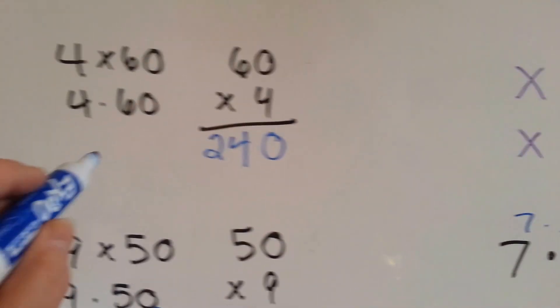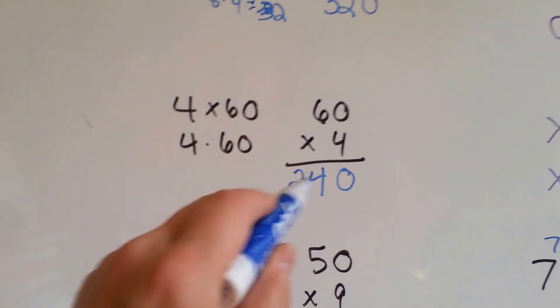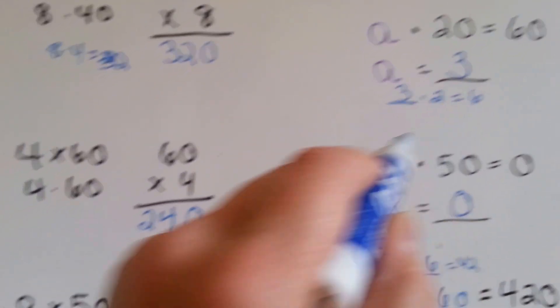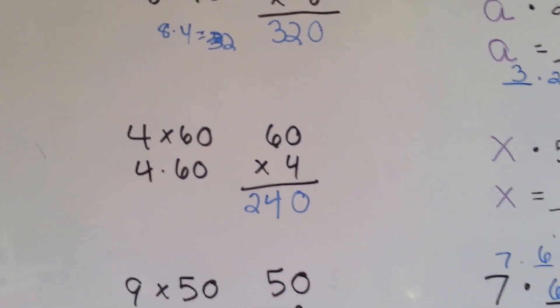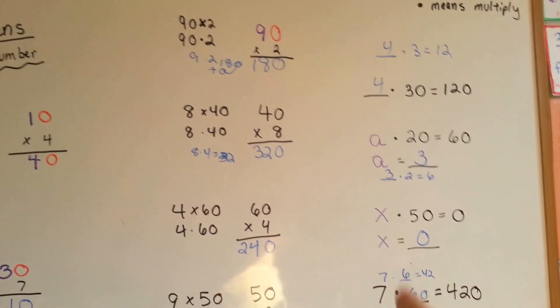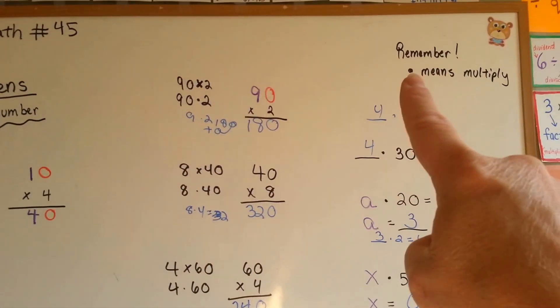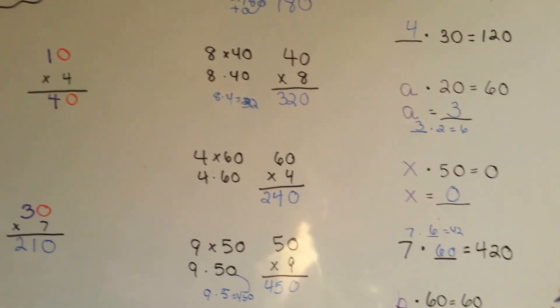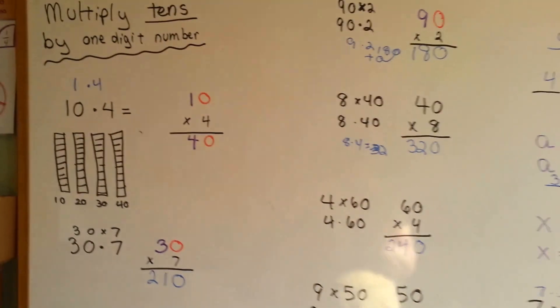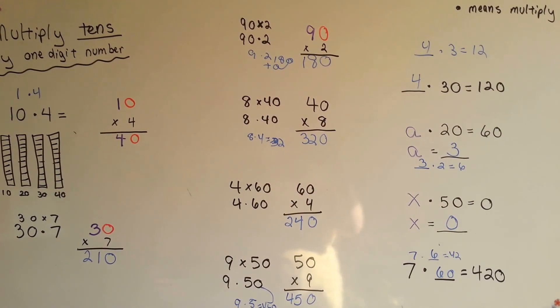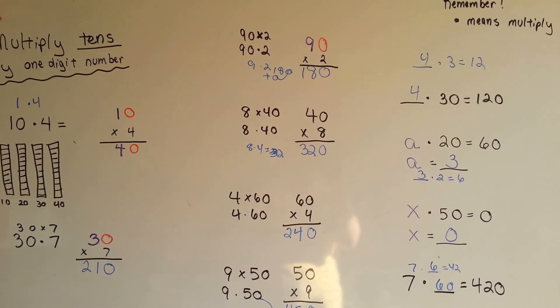So when you're multiplying by tens, it's the same thing as multiplying by the smaller number. You just have a 0 added on. Remember when you're dealing with algebra variables that you can use a dot to mean multiply so you don't get confused if there's an x or an alphabet there. That's multiplying by tens. Keep up the good work, memorize that times table, and I'll see you next time.